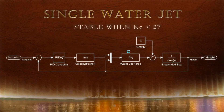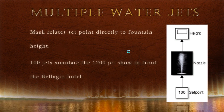After deriving all of our components mathematically, we were able to simulate our model in Simulink. Here we have our components as mathematical functions, and by varying the set points, we were able to get different heights. We then performed a stability analysis, and when K was less than 27, we were stable. We were then able to condense this block diagram into a nozzle mask, represented by this graphic here, and extrapolate the display into 100 jets to simulate the show at the Bellagio Hotel.